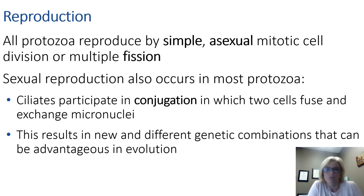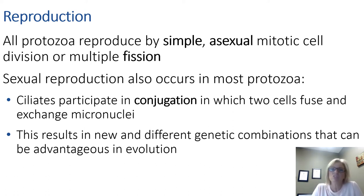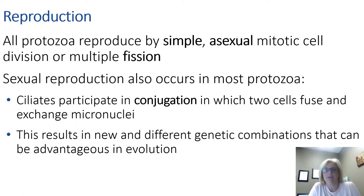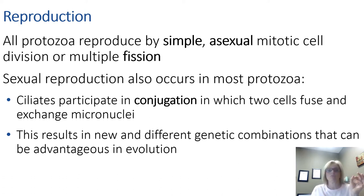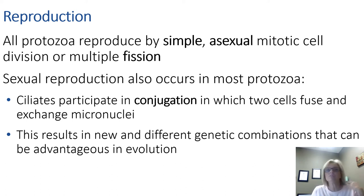How do protozoa reproduce? All protozoa reproduce with a simple asexual method, usually mitotic division. Some pathogenic species, like malaria and toxoplasmosis, reproduce asexually with multiple rounds of division in a host cell and can have rather complex life cycles. Sexual reproduction also occurs during part of the life cycle for most protozoans. Ciliates participate in conjugation, in which two cells fuse and exchange micronuclei, resulting in new genetic combinations — advantageous for evolution.